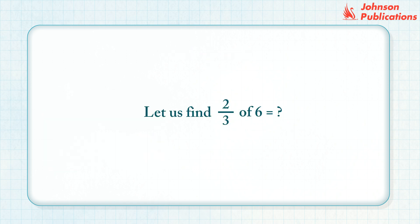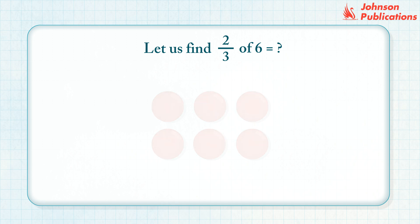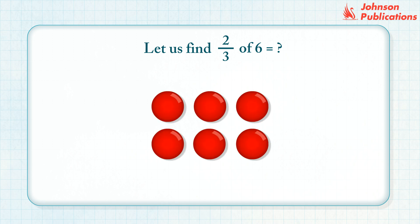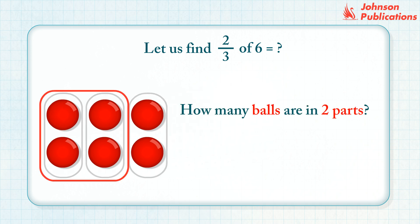Another way to find one third of six is to divide six by three, which is equal to two. Now let us find two thirds of six. We take six balls and divide the group into three equal parts. How many balls are in two parts? So two thirds of six is four.